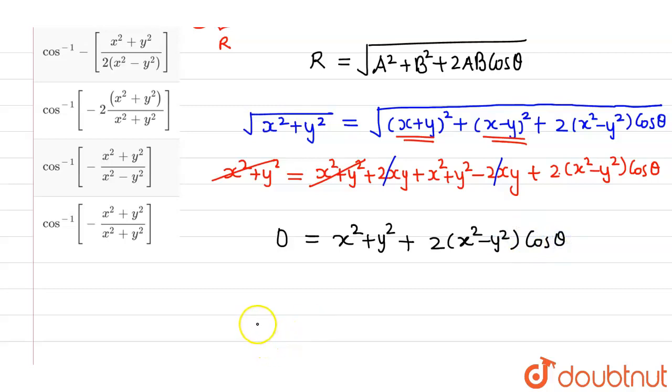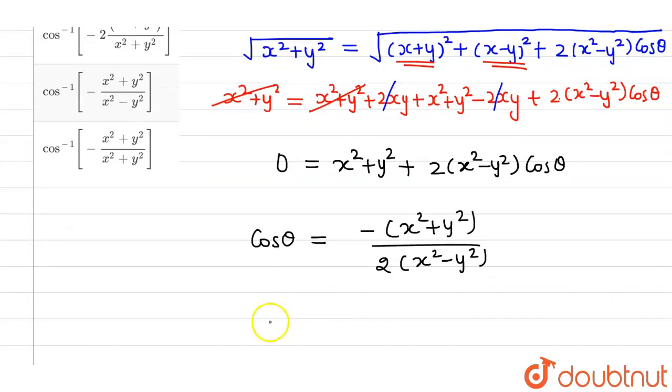So from here, I will be getting cos θ as minus (x²+y²) divided by 2(x²-y²). So this is our theta. So this is our cos theta.